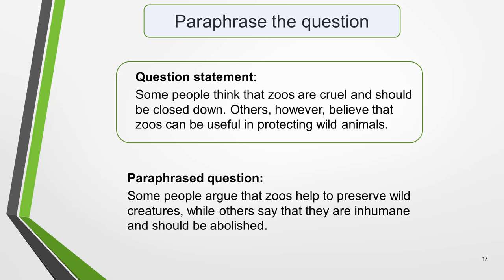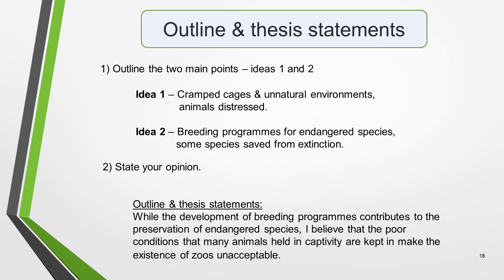Here's one way you could paraphrase the statement: 'Some people argue that zoos help to preserve wild creatures, while others say that they are inhumane and should be abolished.' Note the use of synonyms — you don't have to replace every word, but do so where possible while ensuring your language sounds natural. There aren't many suitable synonyms for 'zoo,' so I've repeated that word. Now we need to add an outline statement outlining the two main points you'll cover, and a thesis statement where you state your opinion. Often you can combine these in one sentence.